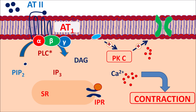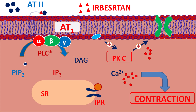In this way, angiotensin 2 produces vasoconstriction by acting on AT1 receptors. Now Irbesartan, as an angiotensin 2 receptor blocker, binds to these receptors and inhibits the action of angiotensin 2. Contraction is thereby prevented, resulting in vasodilation, so blood pressure is reduced and renal damage can be prevented by reducing activation of the renin-angiotensin system.